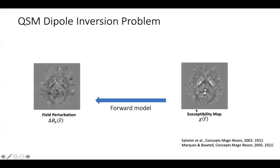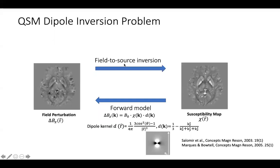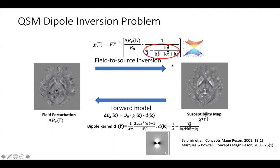With known susceptibility distribution, we can calculate the induced field perturbation using the forward model, which is a dipole kernel convolution. In the field-to-source inversion, it involves division of the dipole kernel in the k-space. As we can see, the dipole kernel has a value of zero on a conical surface in the k-space, so the field-to-source inversion is ill-posed.